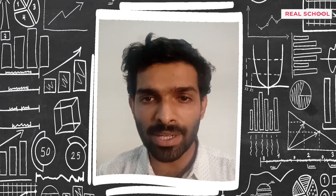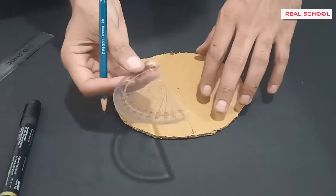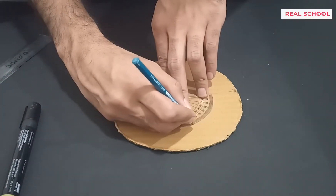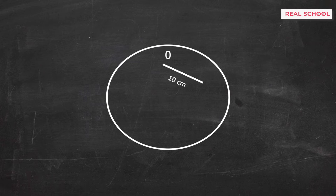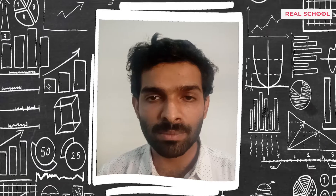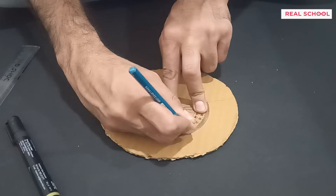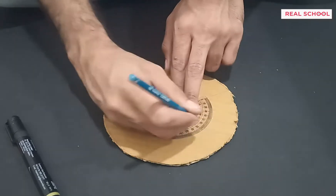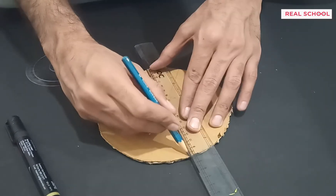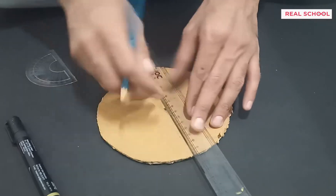To make the trundle wheel more accurate, make markings after every 10 centimeters around the circumference — the zero pointer, 10-centimeter pointer, 20-centimeter pointer, 30-centimeter pointer, and so on. For a 50-centimeter circumference divided into five parts, we divide 360 degrees by 5, which gives 72 degrees. Use a protractor to mark out five sections each 72 degrees apart around the center of the circle, and extend these lines to the edge.